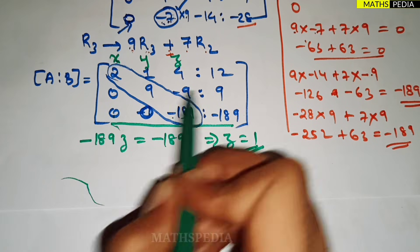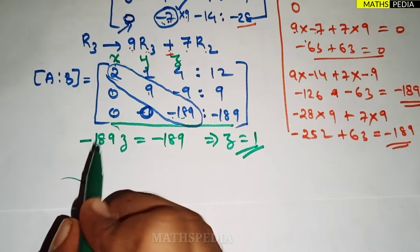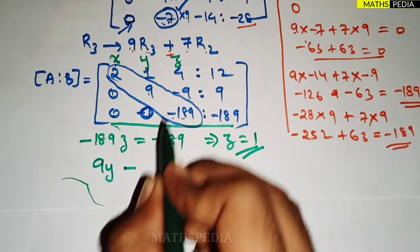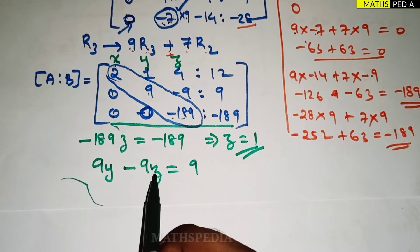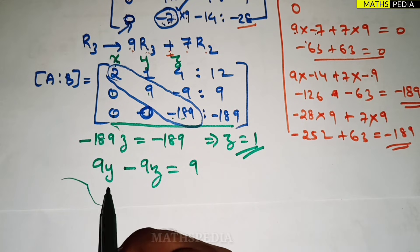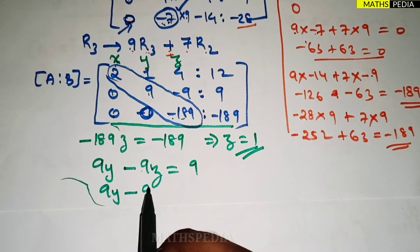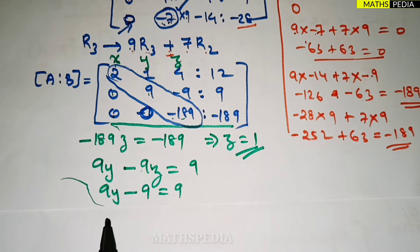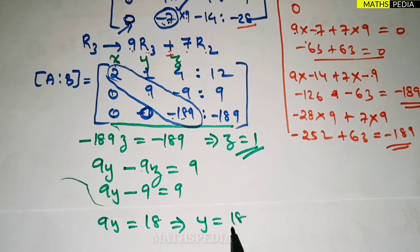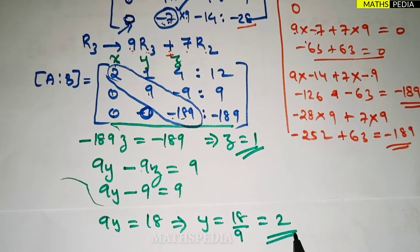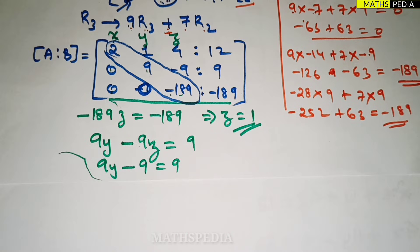Now writing the equation from the second row: 9y minus 9z = 9. Since z = 1, we get 9y minus 9×1 = 9, so 9y = 9 + 9 = 18, therefore y = 18/9 = 2.